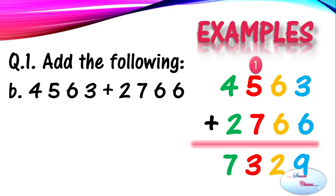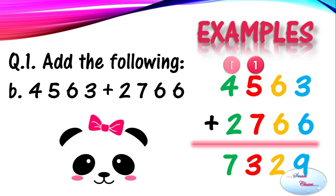Which will make 5 plus 1 as 6, and 6 plus 7 as 13. So we will write 3 over here and 1 will go as the carry over on the thousands place, which will make it 4 plus 1 is 5, and 5 plus 2 as 7. So the answer which we will get after adding both the numbers is 7329, which is the sum of these numbers.